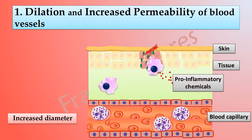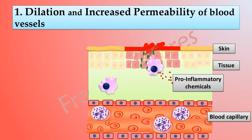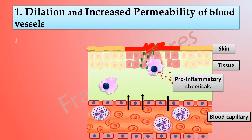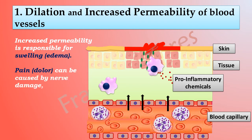Dilation means an increase in diameter of the blood vessels, which increases blood flow to the damaged area. Dilation is responsible for redness (erythema) and heat (calor) associated with inflammation. Increased permeability allows defensive substances and cells such as phagocytes to pass through the walls of blood vessels and enter the injured area. This permeability is responsible for swelling or edema, and pain (dolor) can be caused by nerve damage, irritation by toxins, or pressure of edema.